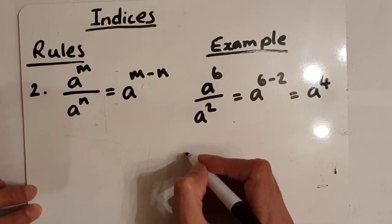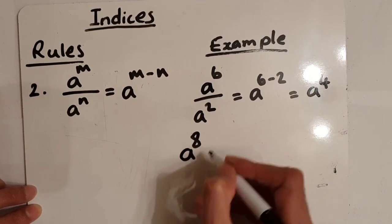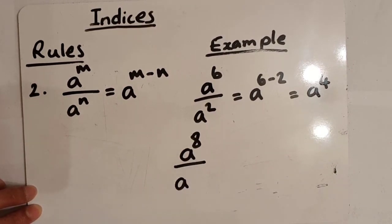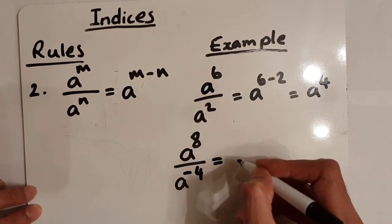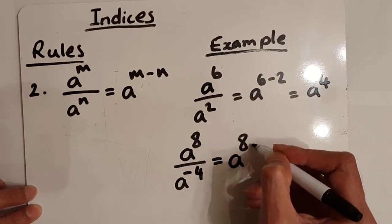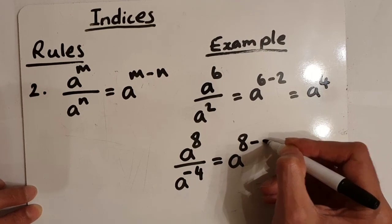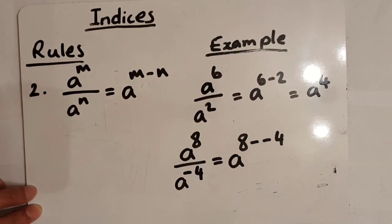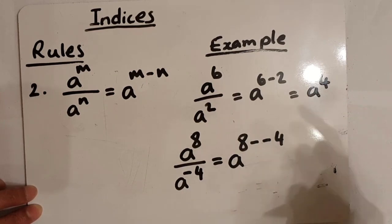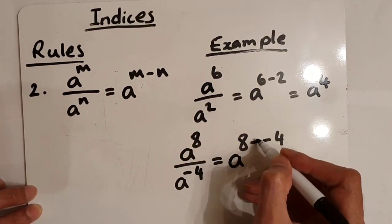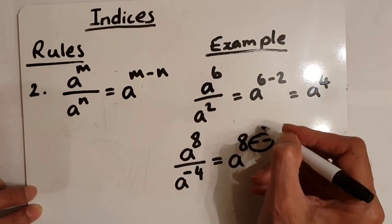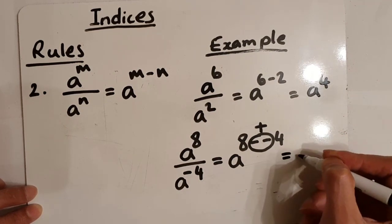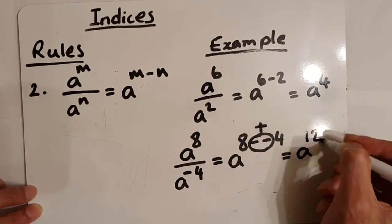Another example: a to the power of eight divided by a to the power of minus four. Dividing means we take away the powers, so it would be a to the power of eight take away minus four. From the adding and subtracting negative numbers rule, two negatives next to each other turn into a positive, so our answer is a to the power of eight plus four, which is twelve.